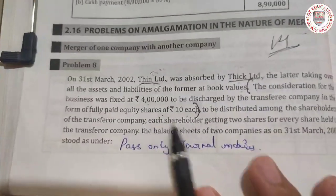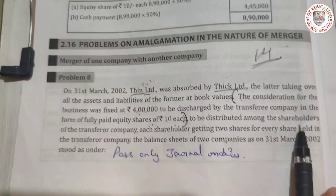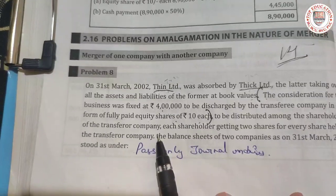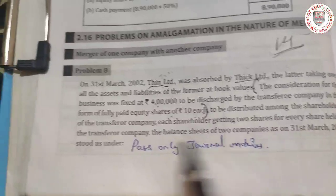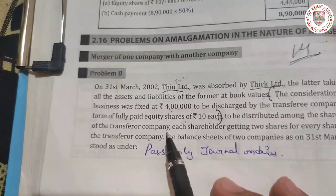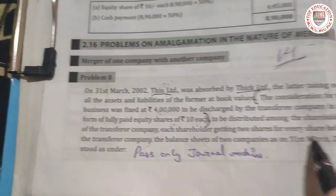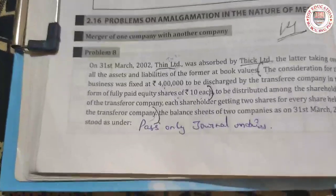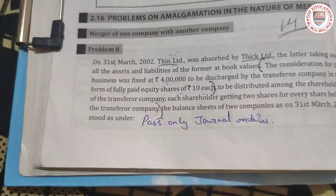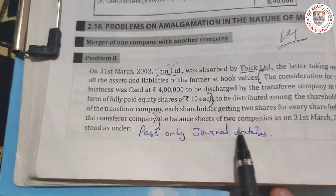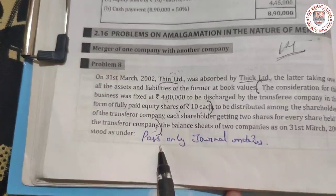The shares are to be distributed among the shareholders of the transferor company — each shareholder getting two shares for every share held in the transferor company. Now for the purchase consideration calculation: 4 lakh divided by 10 gives 40,000 equity shares of rupees 10 each.